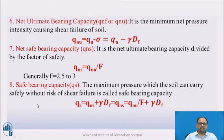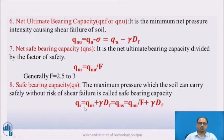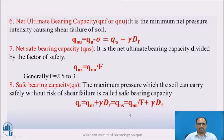The next terminology is safe bearing capacity, denoted as Q_S. The maximum pressure which the soil can carry safely without risk of shear failure is called safe bearing capacity. Q_S = Q_NS + γ × D_F, i.e., net safe bearing capacity plus overburden pressure gives the safe bearing capacity.